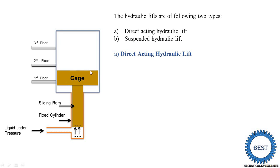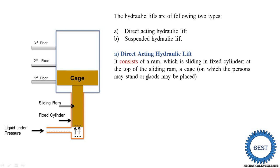The last component is the cage. We consider this to be our apartment, with various floors — first, second, and third. Suppose you enter from the first floor and you need to reach up to the third floor, then you use the lift. This is the hydraulic lift. It consists of different components already explained: fixed cylinder, sliding ramp, and cage. The cage is the location where different persons stand for moving to different floors.